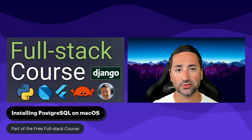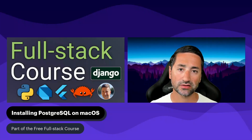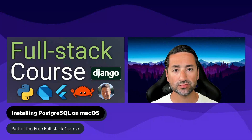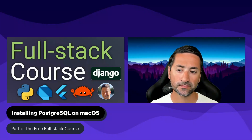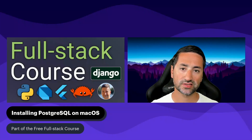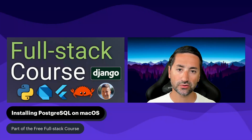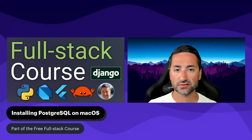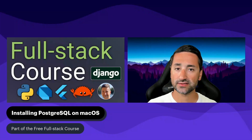Hi everyone, and welcome to this chapter of the FreeFall Stack course. In this chapter, we're going to install Postgres on macOS. We're going to talk more about what Postgres is, but the installation process is kind of different from macOS to Linux and from Linux to Windows. Postgres uses a system of authentication that is not available as of yet on Windows. So I've decided to create three separate videos covering macOS, then Linux, and Windows.